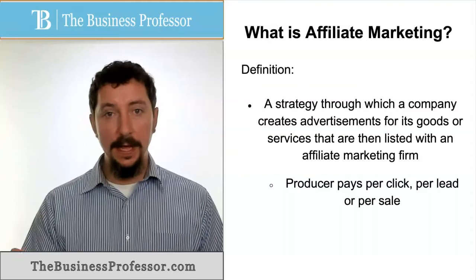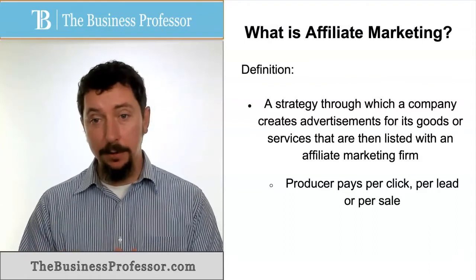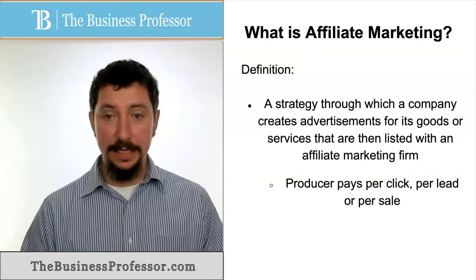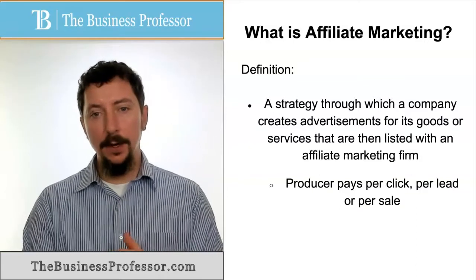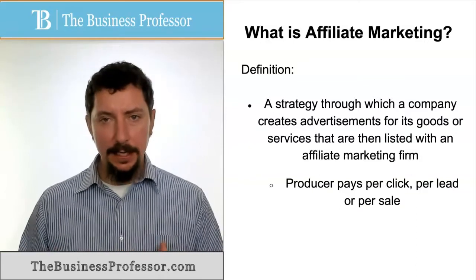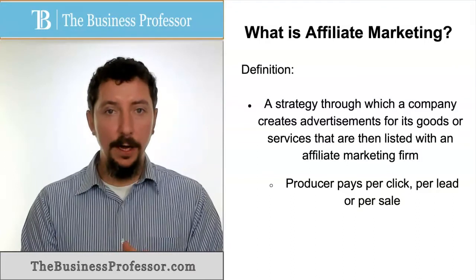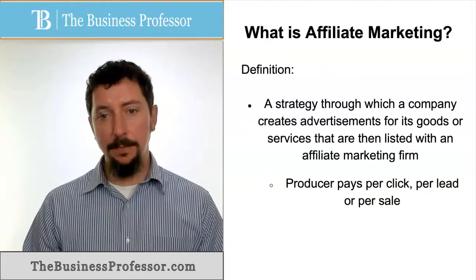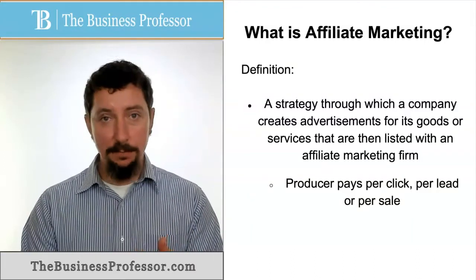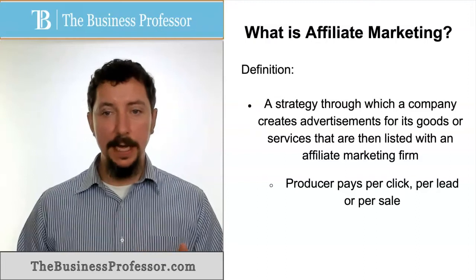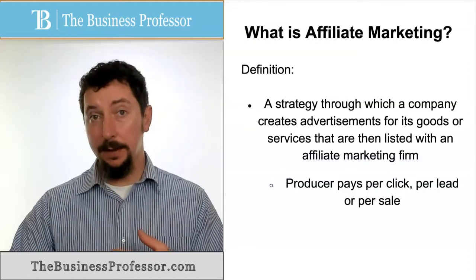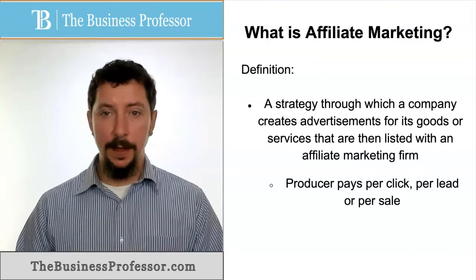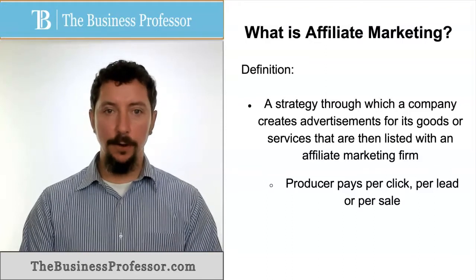That way we're paying for what's called pay-per-click services, or we might pay per lead or per sale. So again, we create an ad, we offer it up to an affiliate marketing firm, and pay them either each time somebody clicks on the ad, each time we get a potential sale, or an actual sale. That's how affiliate marketing works.